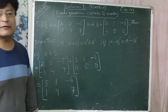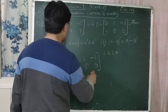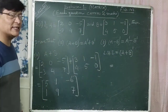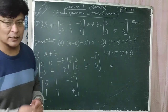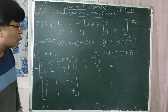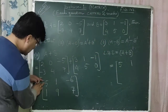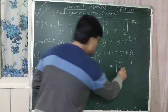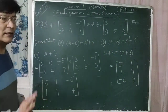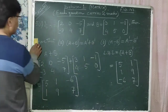Now LHS is equal to (A+B) dash, which is the transpose of the matrix A+B. To get the transpose, change rows into columns and columns into rows. The first column becomes the first row: 5, 1. The second column becomes the second row: 1, 9. The third column becomes the third row: -6, 7. So this is your left hand side, (A+B) dash.